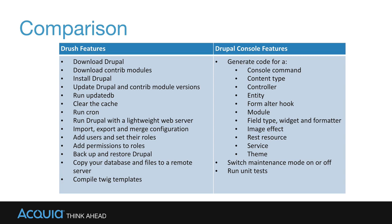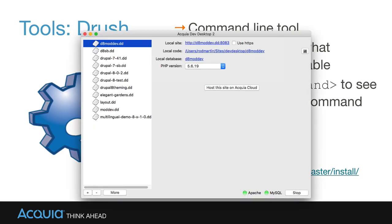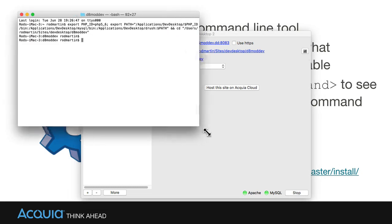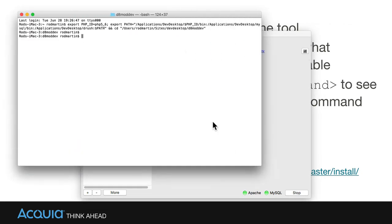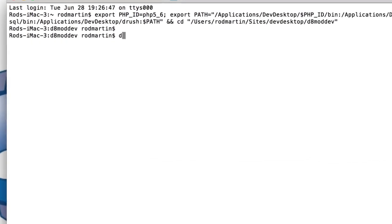It also has a few of the same abilities as Drush, such as user password reset. Either way, both are available for you to use and experiment with as a module developer. Drush is the command line tool we've been using. If you head over to Acquia's Dev Desktop and click on that little terminal window, it'll pop up a terminal window right inside your site.